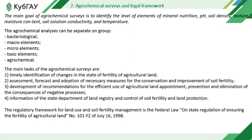The main tasks of agrochemical surveys are timely identification of changes in the state of fertility of agricultural land, assessment, forecast and adoption of necessary measures for the conservation and improvement of soil fertility, development of recommendations for the efficient use of agriculture and land, prevention and elimination of consequences of negative processes, and information of the state department of land registry and control of soil fertility and land protection. The regulatory framework in Russia is the federal law on state regulation of ensuring the fertilization of agricultural land.